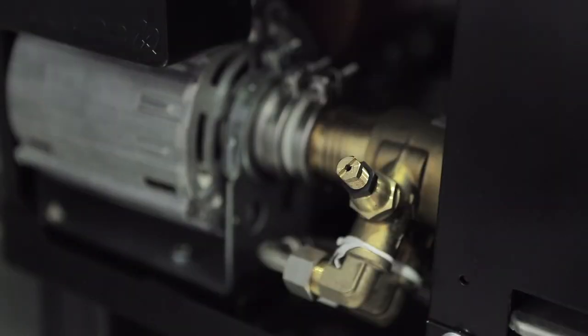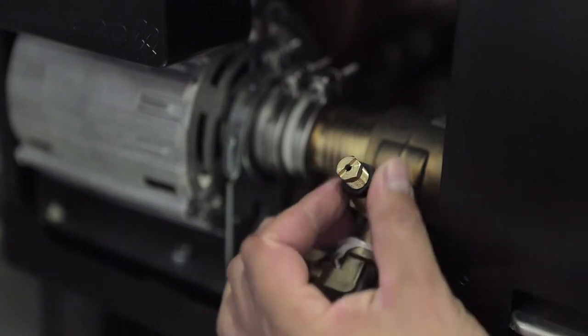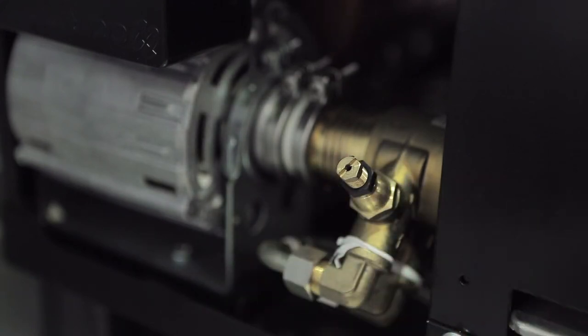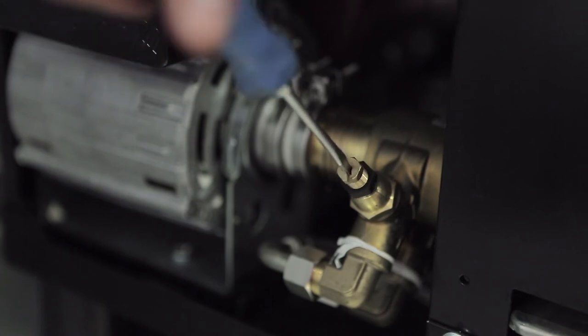The first thing we have to do is to loosen the safety nut with a size 14 spanner so that we can later set the pressure of the pump using the adjustment screw. Clockwise increases pressure and anti-clockwise releases pressure.